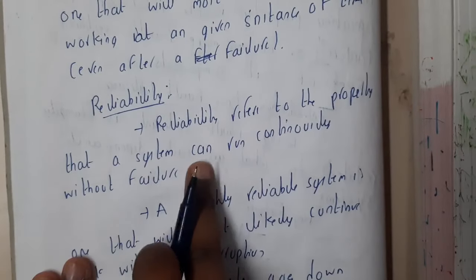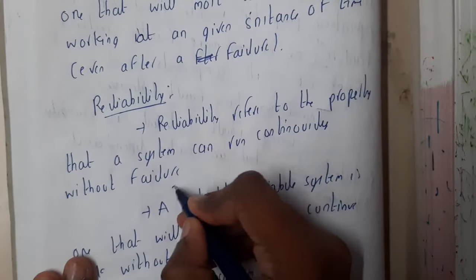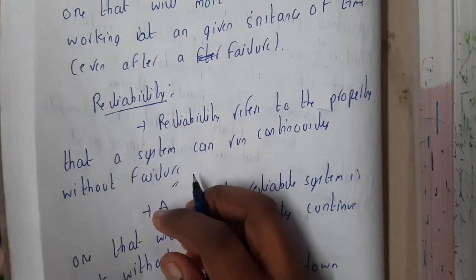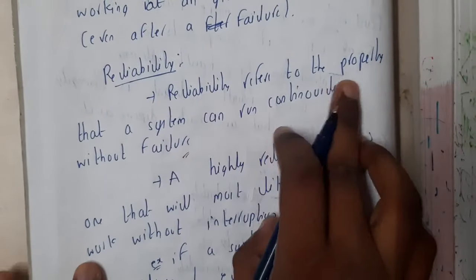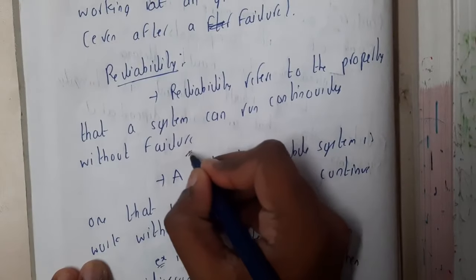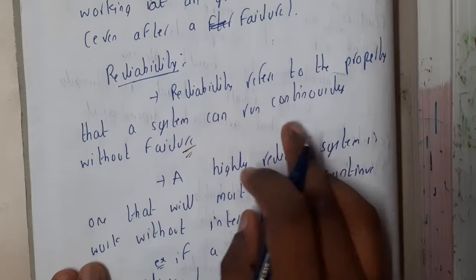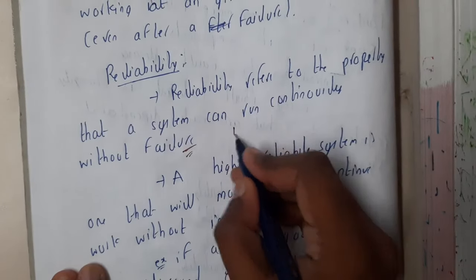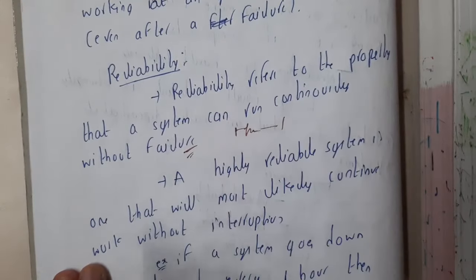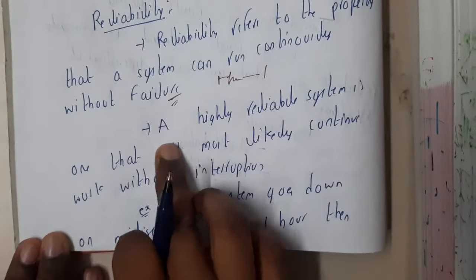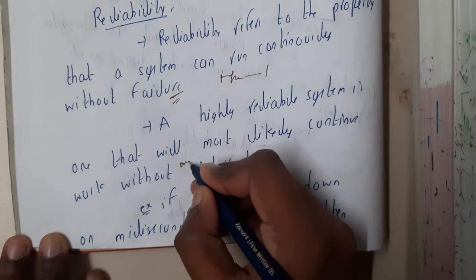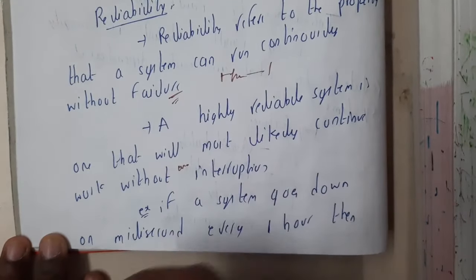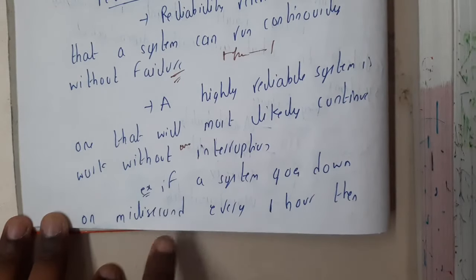Reliability refers to the property that a system can run continuously without failure. Here, 'continuously' is the key word — there should be no failure in between, not even for a millisecond or microsecond. A highly reliable system is one that will most likely continue working without any interruption.